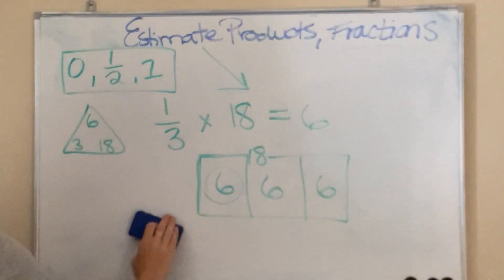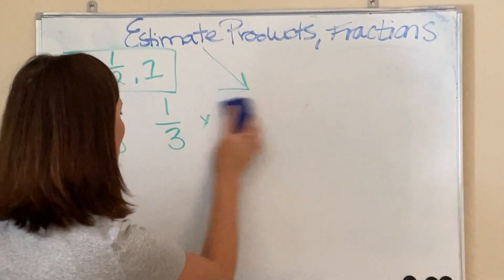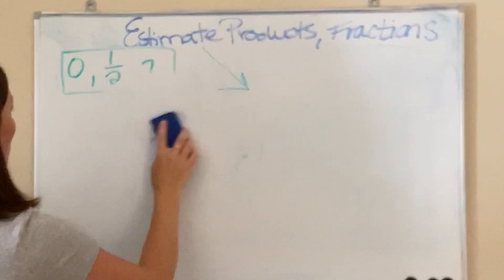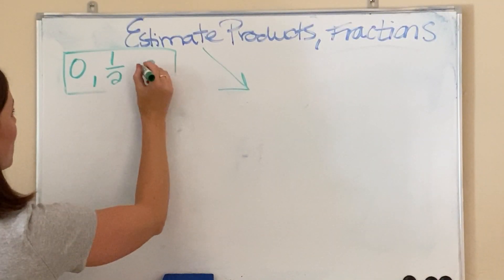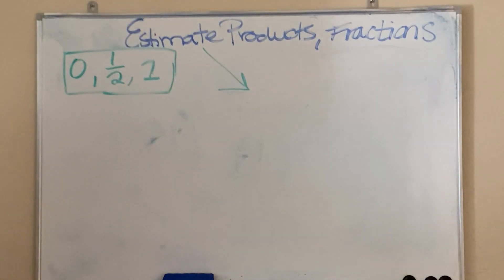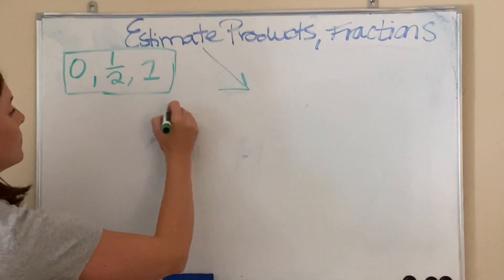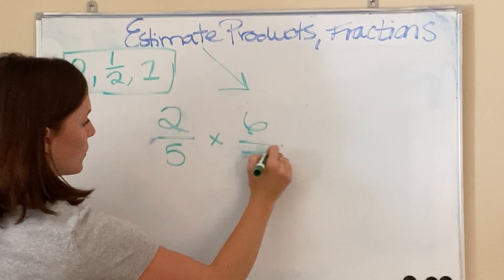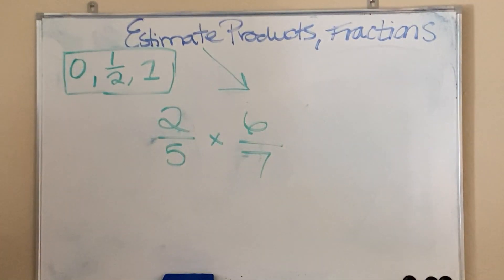That's how we estimate products of fractions. Now, here's what we're going to do when we round to a 0, a half, or a whole. That's when we have 2 fractions that we're working with. So, if we have 2/5 and 6/7, we're going to round both of these.